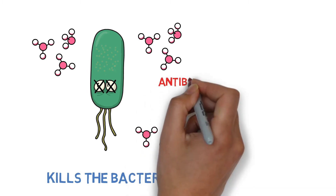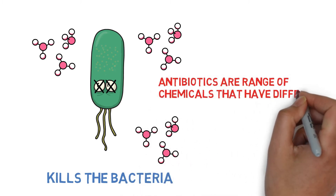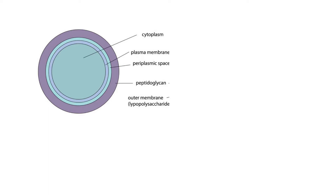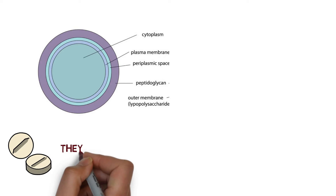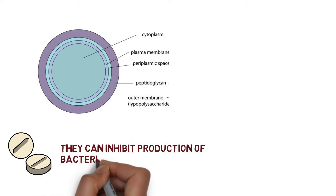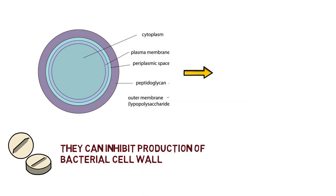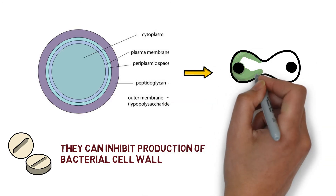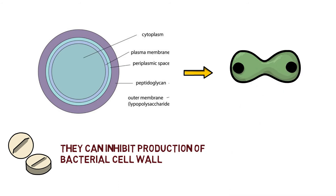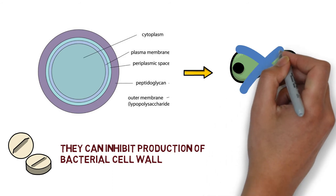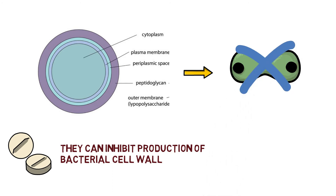Antibiotics are a range of chemicals with different functions. Some antibiotics function by attacking the cell wall of bacteria — they inhibit the production of the bacterial cell wall. During cell division and cytokinesis, the bacterial cell wall is unable to form, and even after multiplication the bacterial cells cannot separate, so the cell dies.